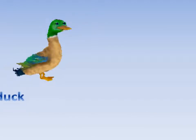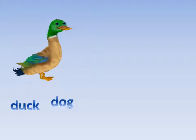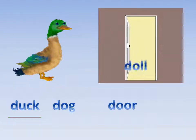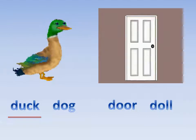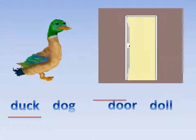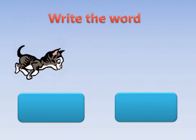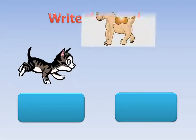What is this? Duck or dog? Which one? Yes, duck! Excellent! What is this? Door or doll? Very good — door! Very good, door. Exercise two: write the word. Write the word.